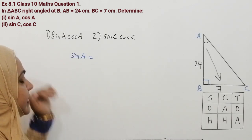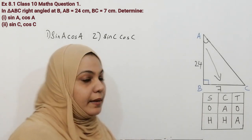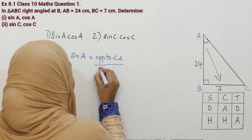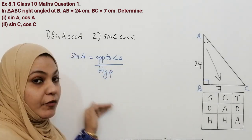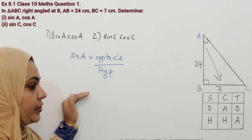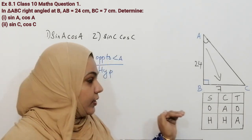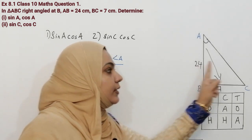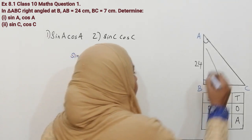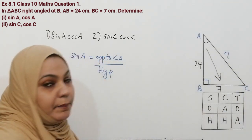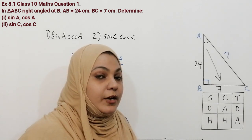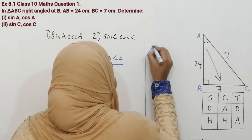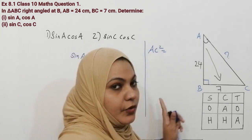What is sin A? Sin means opposite over hypotenuse, so sin A is equal to the side opposite to angle A divided by hypotenuse. Before starting we have to check whether our triangle is complete or not. In this triangle you can see two sides are given but one side is missing. So what is AC here? AC is the hypotenuse — the longest side of the right angle triangle. We can find AC using the formula for hypotenuse.